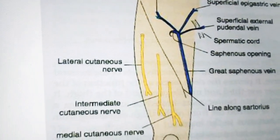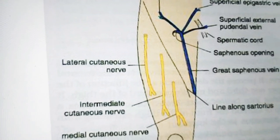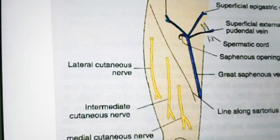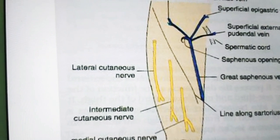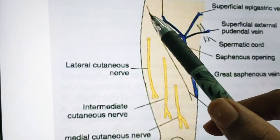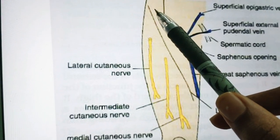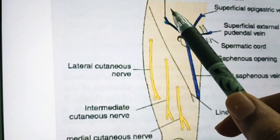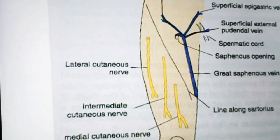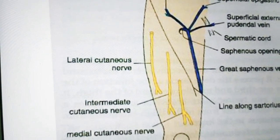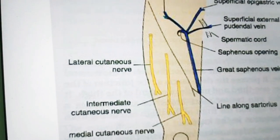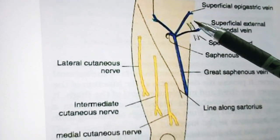On the iliac crest there is a tubercle called the tubercle of iliac crest. It is a low bony prominence situated on the outer lip of the iliac crest. So if this is the iliac crest and here is the anterior superior iliac spine, then on the outer lip in the middle you will find the tubercle of iliac crest.